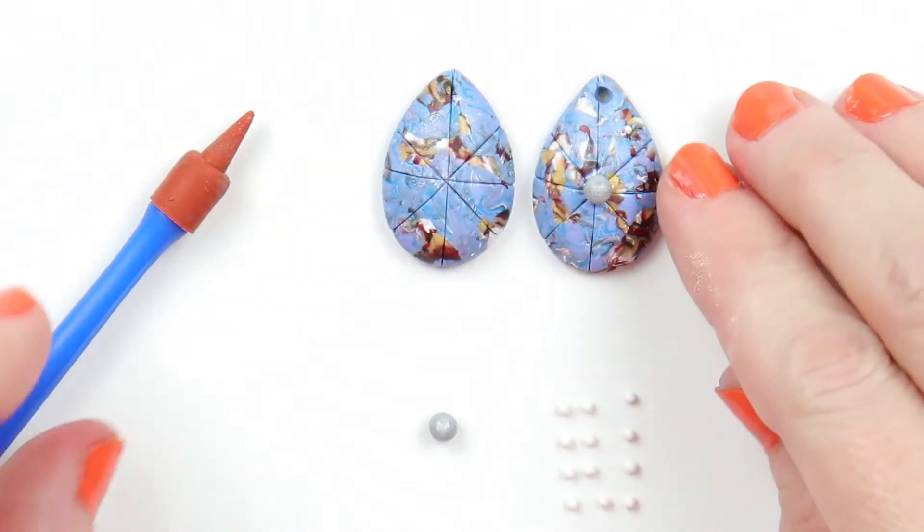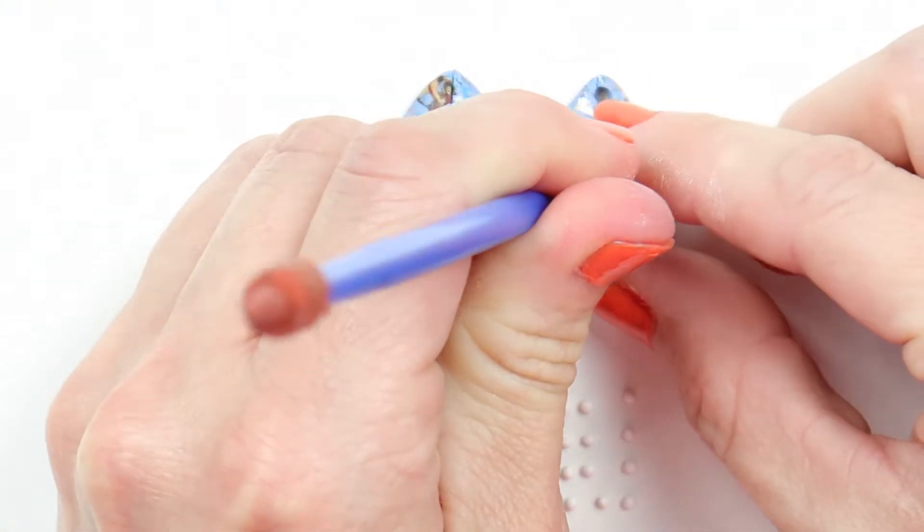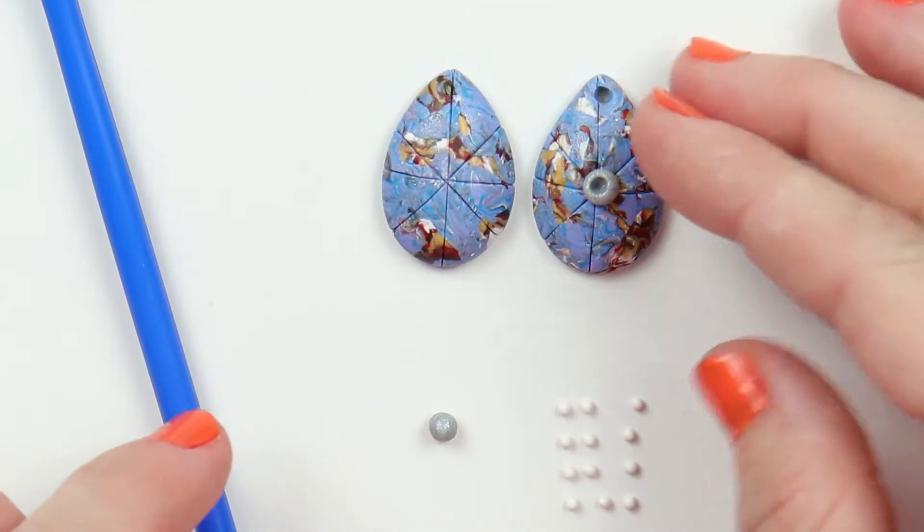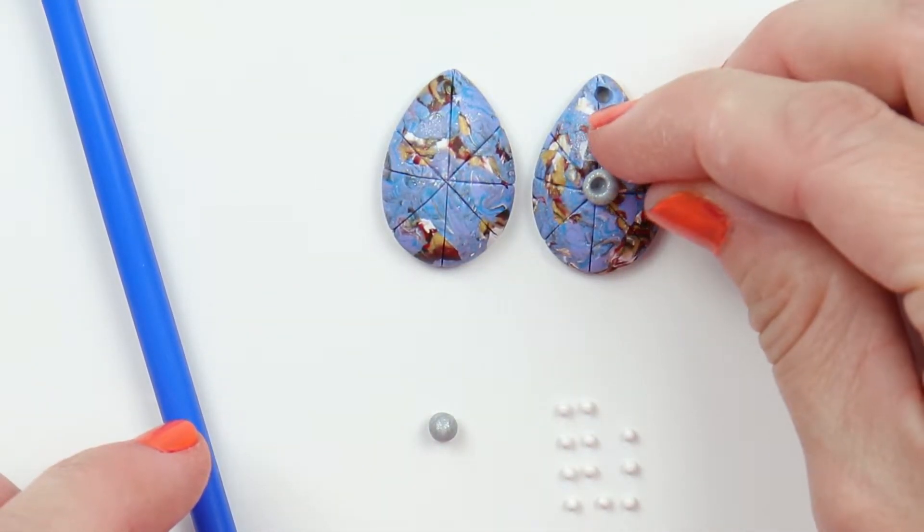Take a ball of gray clay and place it in the middle of your piece, and then use a tool and make a hole in the middle. I've made six balls of white clay. I'm going to place them around the gray in the middle.